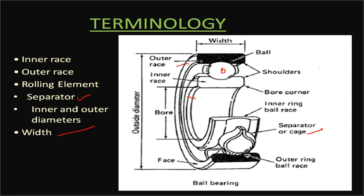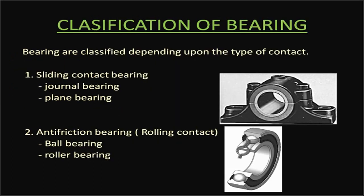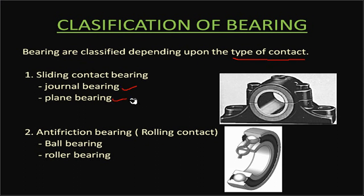Bearings are classified based on the type of contact. One category is sliding contact bearings and the other is anti-friction or rolling contact bearings. Under sliding contact bearings there are journal bearings and plane bearings. Under anti-friction or rolling contact bearings, there are ball bearings and roller bearings.